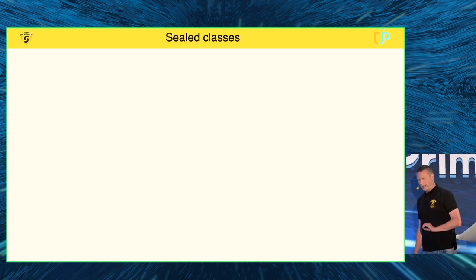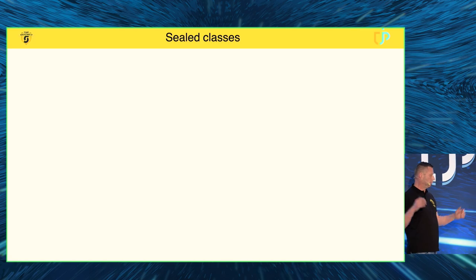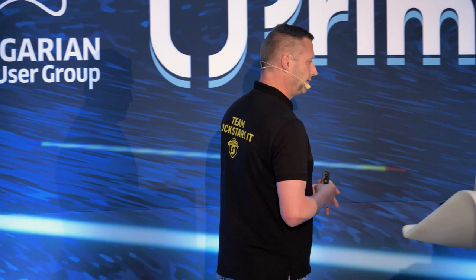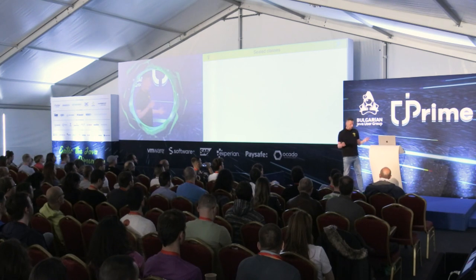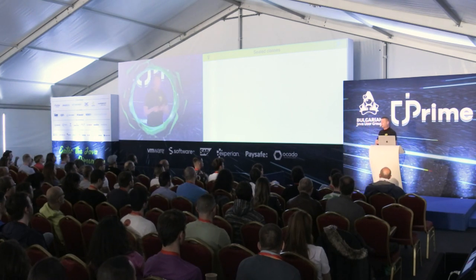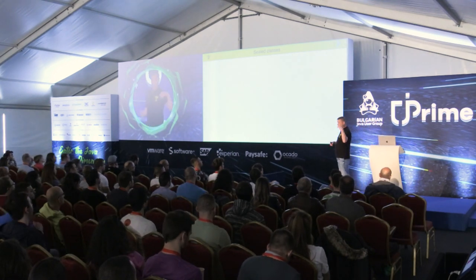Sealed classes were added to Java because, currently, if you define a public class, either anyone can inherit from it, or you make it final — like the String class — so no one can inherit. Those are basically the two flavors you have in Java: either everyone can access it or no one can.